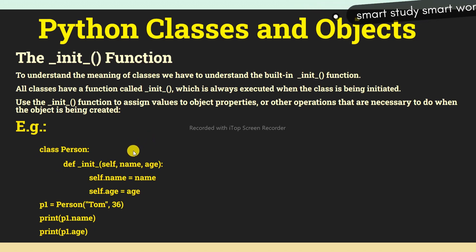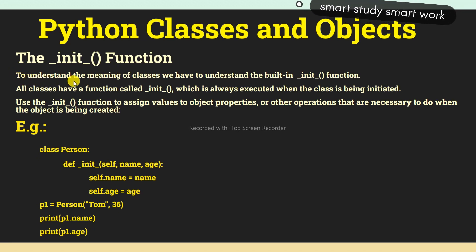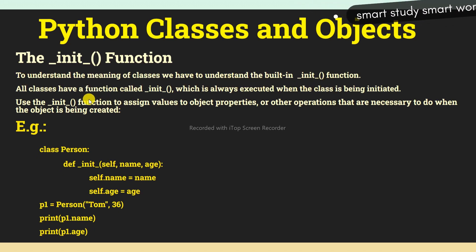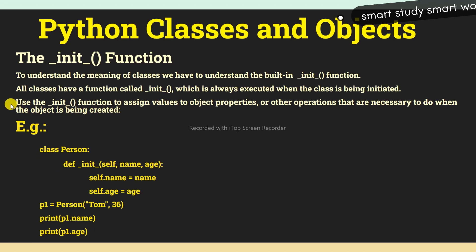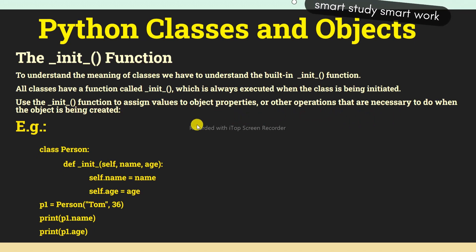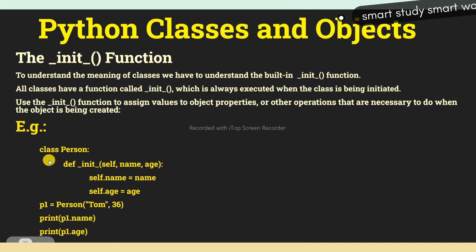Now we are learning the __init__ function in Python. To understand the meaning of classes, we have to understand the built-in __init__ function. All classes have a function called __init__, which is always executed when the class is being initiated. Use the __init__ function to assign values to object properties or do other necessary operations when the object is being created.